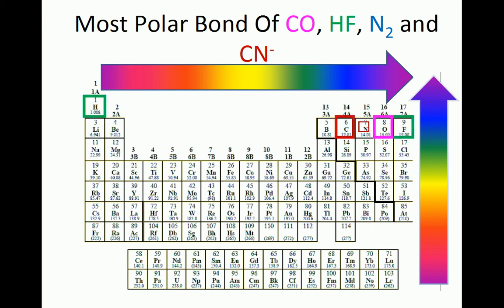Since molecular nitrogen's bond is between identical atoms, it is clearly the least polar. In fact, it is not polar at all. Therefore, the correct answer is choice C.